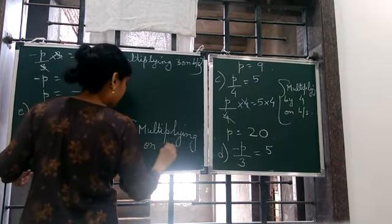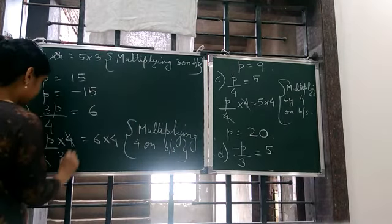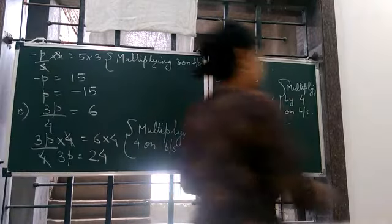4 on both sides. 4 forward cancel. 3p is equal to 24. Now what we do, we remove the 3 from here.